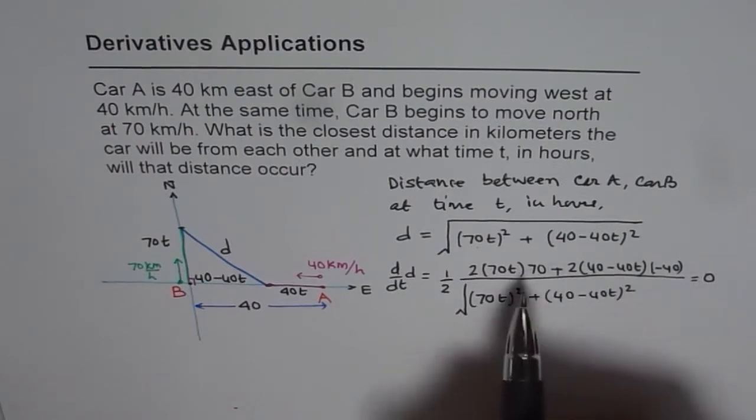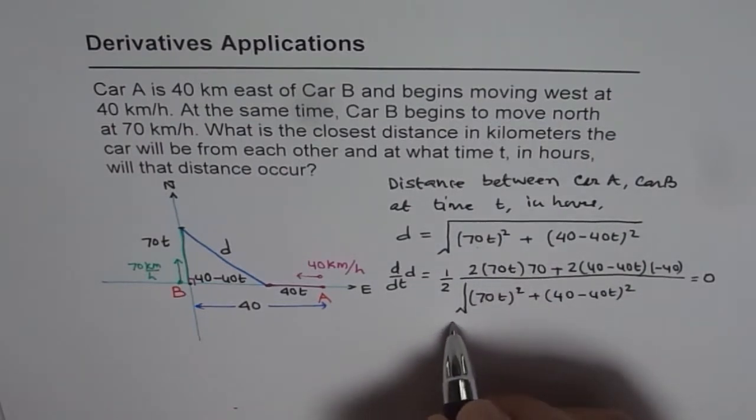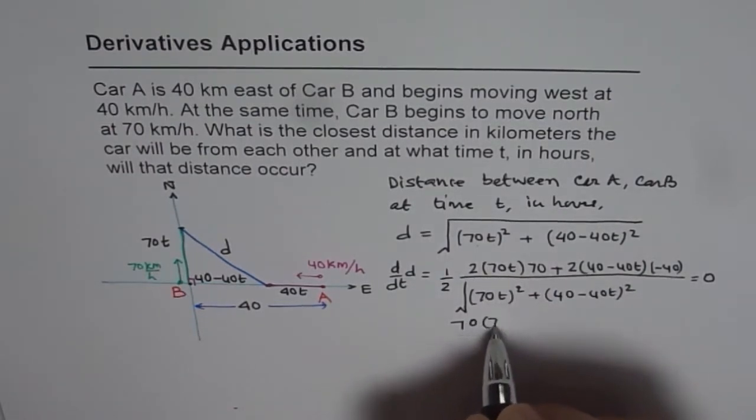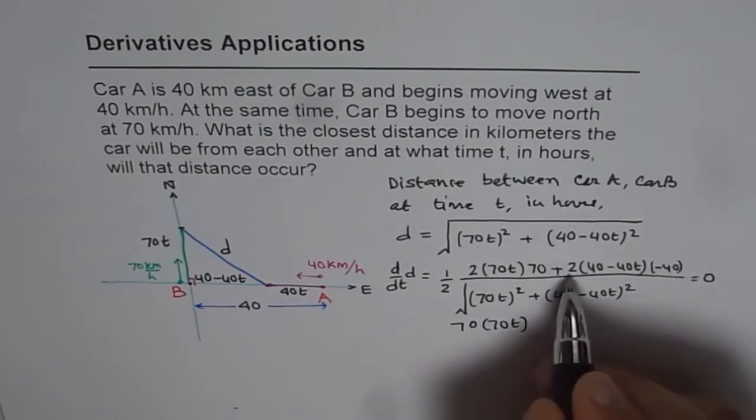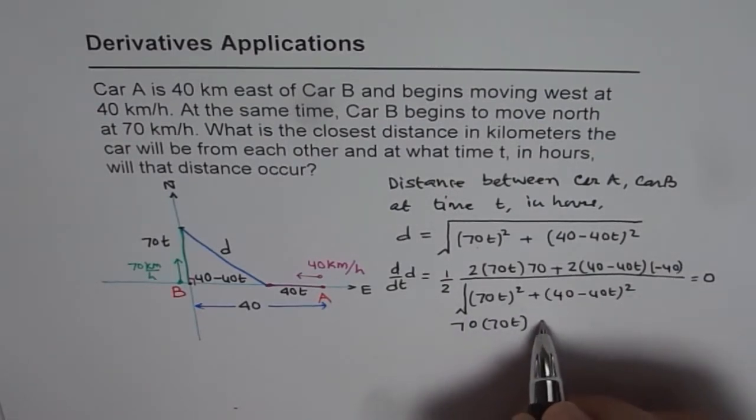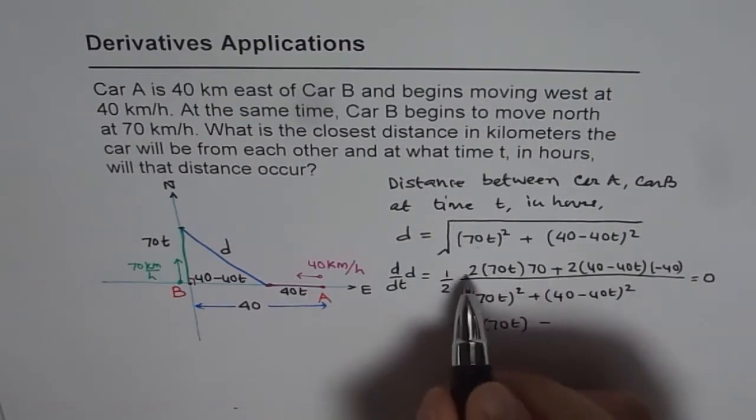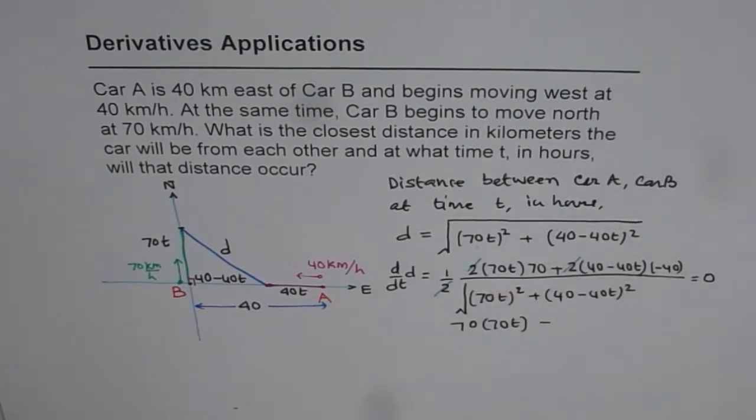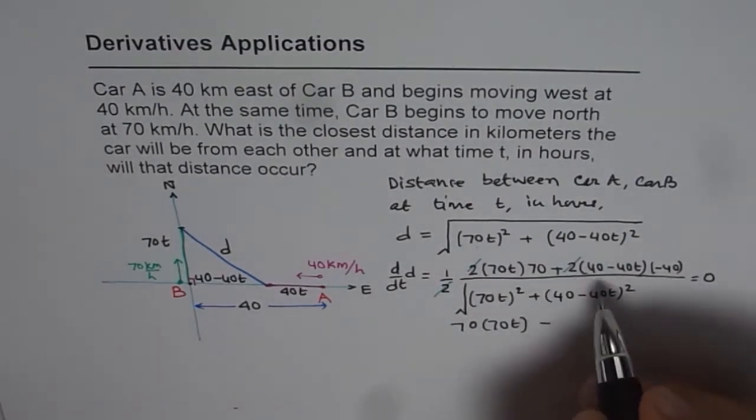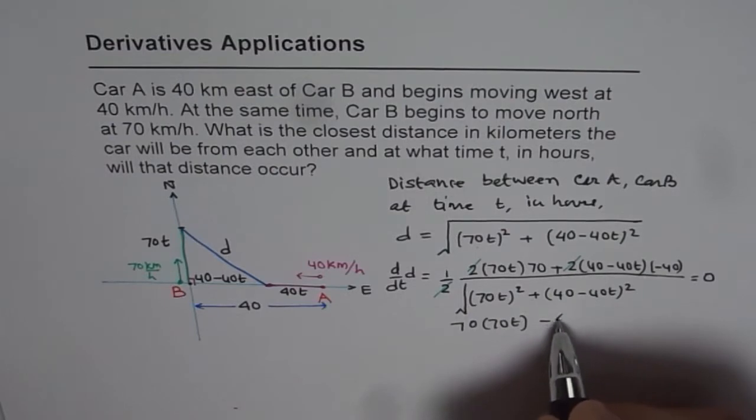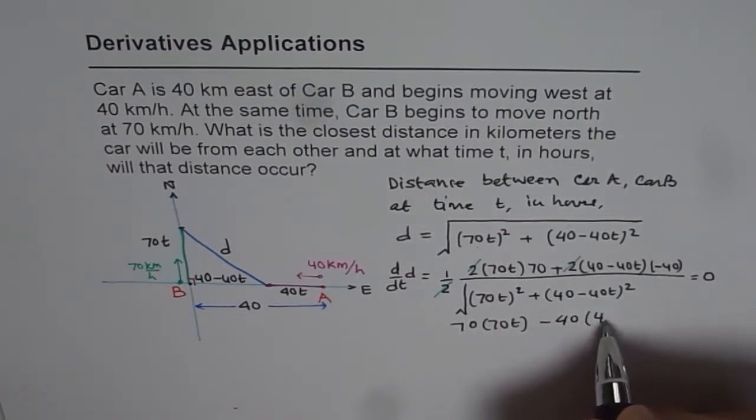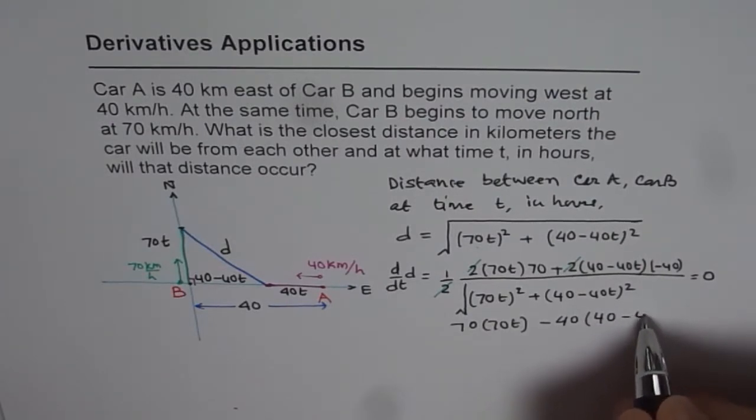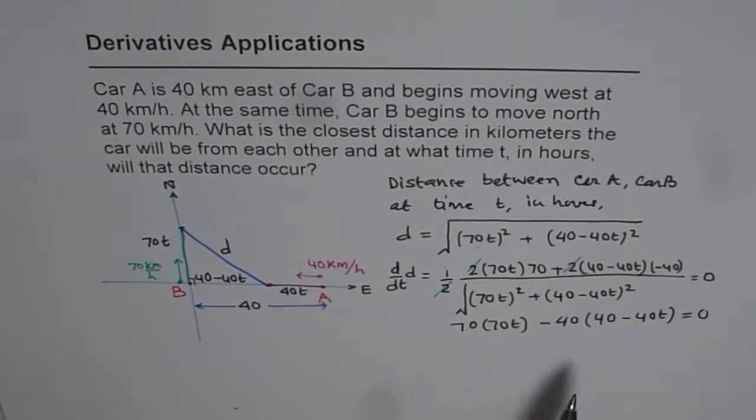So that part I like you to do. So basically, what you are left with is something like this. 70 times 70T and minus 40 will make this negative here. So minus, I have already canceled 2 out. Let me just do it for you. So we have minus 40. You could have taken 40 also outside. So you have to solve this equation, find T.